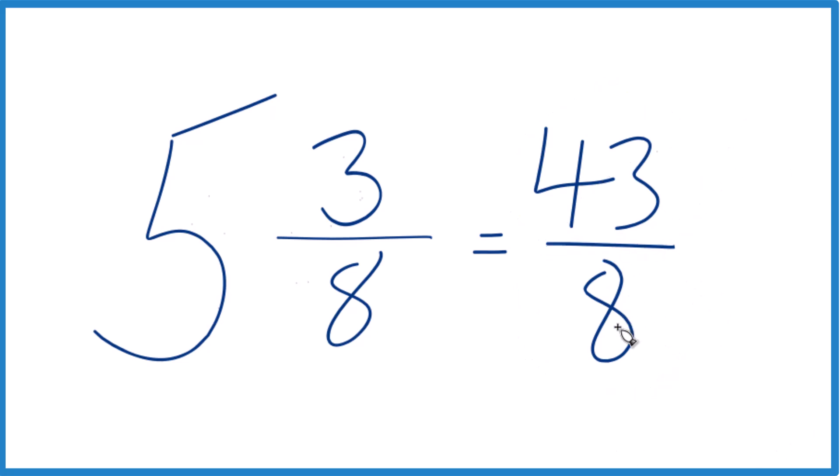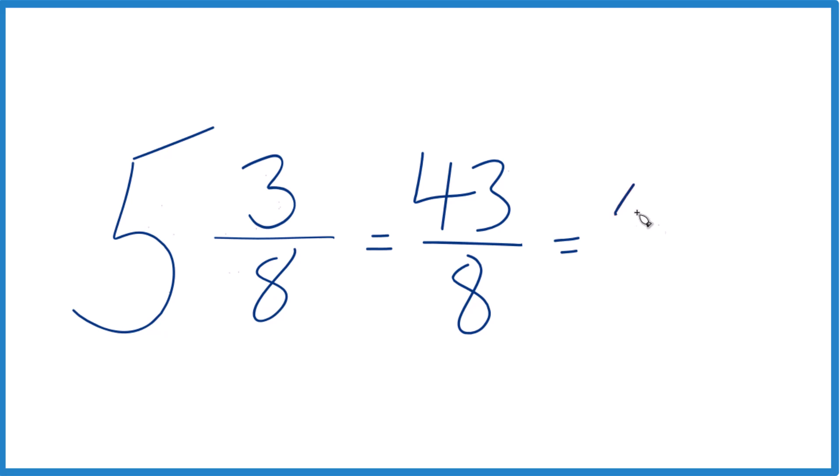You can even check your work here, because 8 goes into 40. 5 times 8, that's 40. Then we'd have 3 left over. Bring that denominator across. We get 5 and 3 eighths. That's the mixed number we started out with, so we know we did it right.